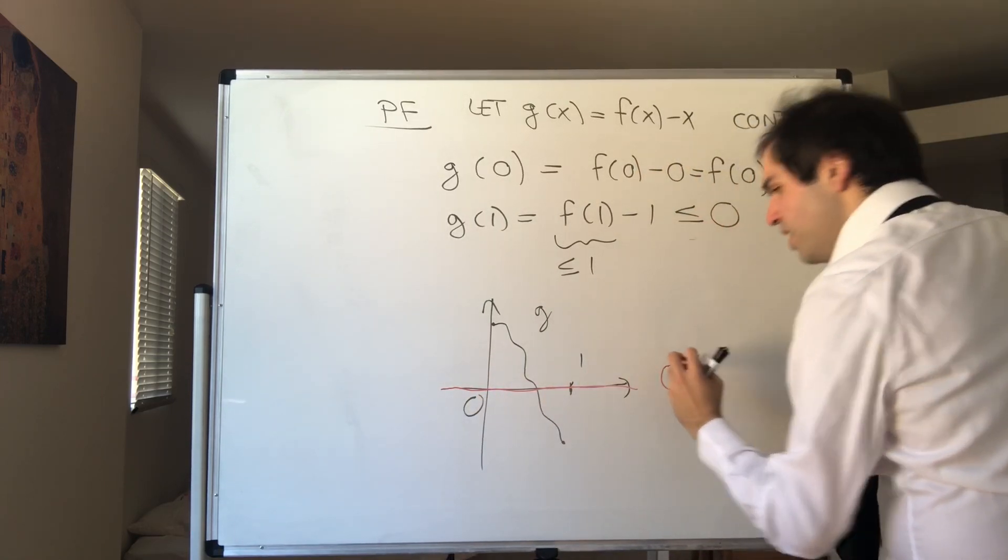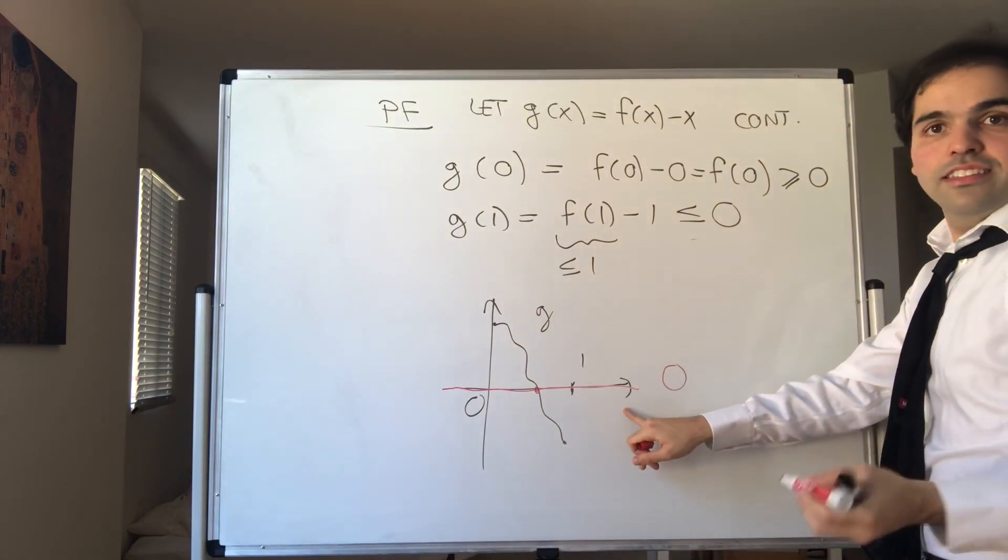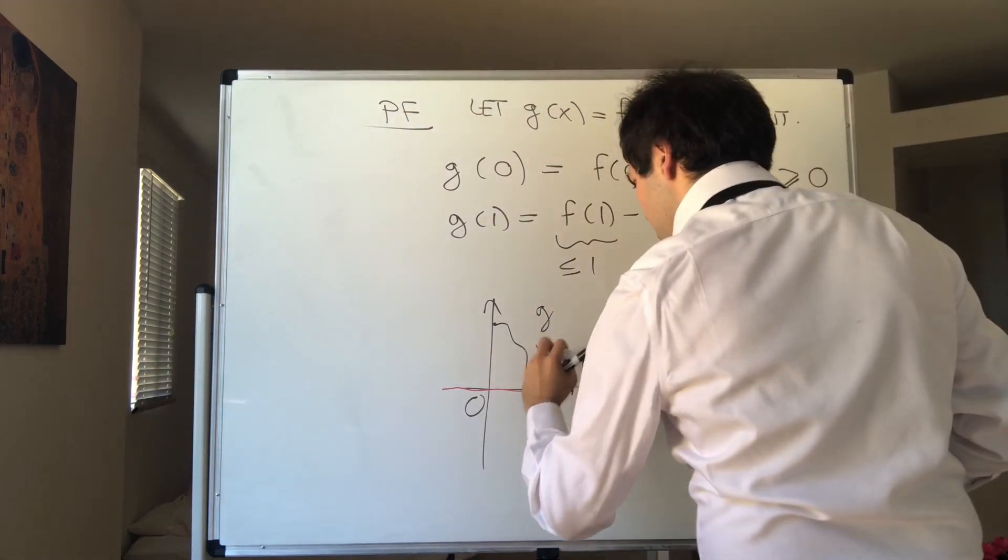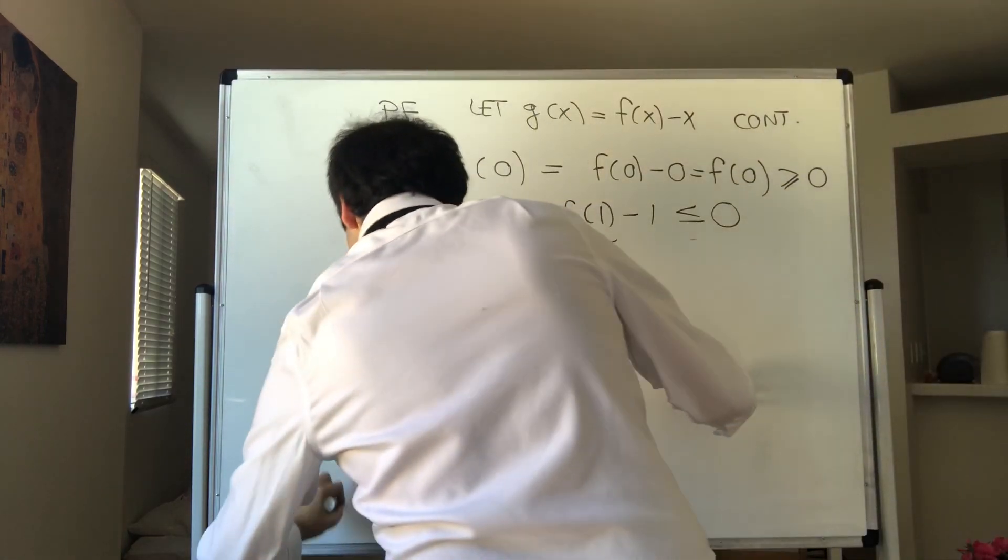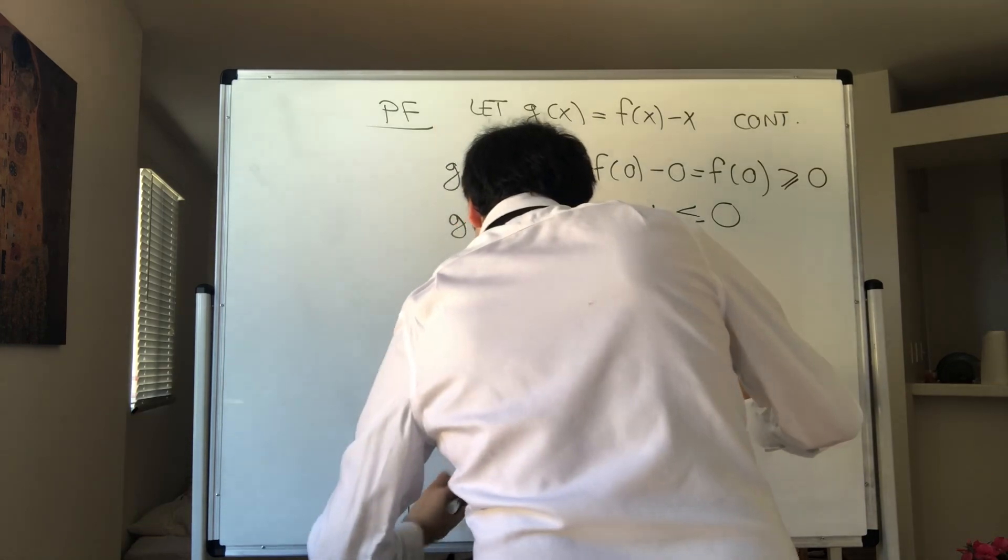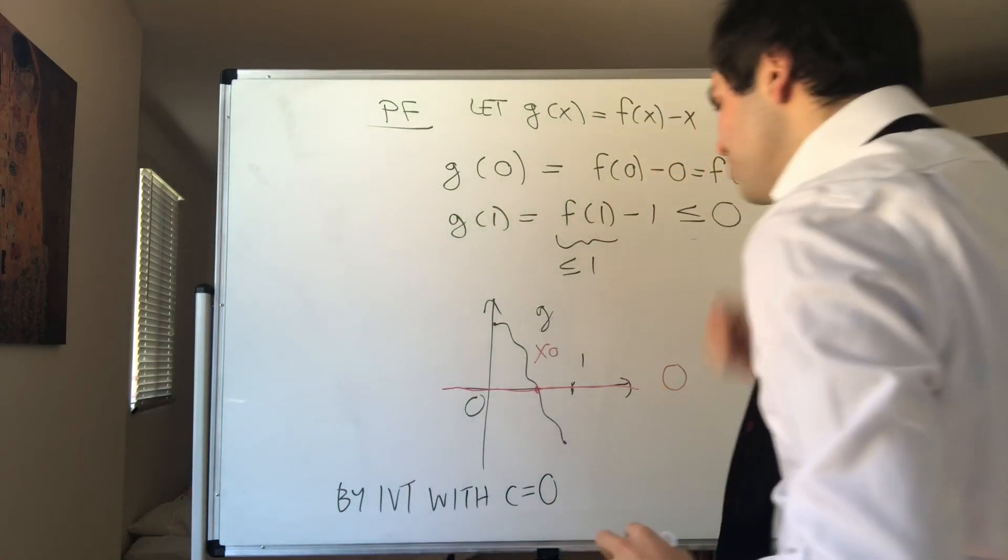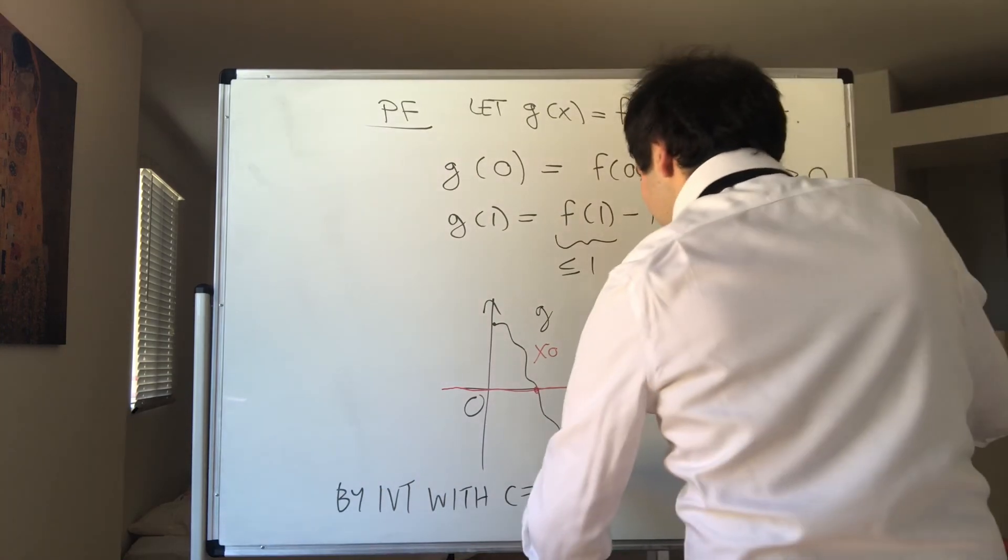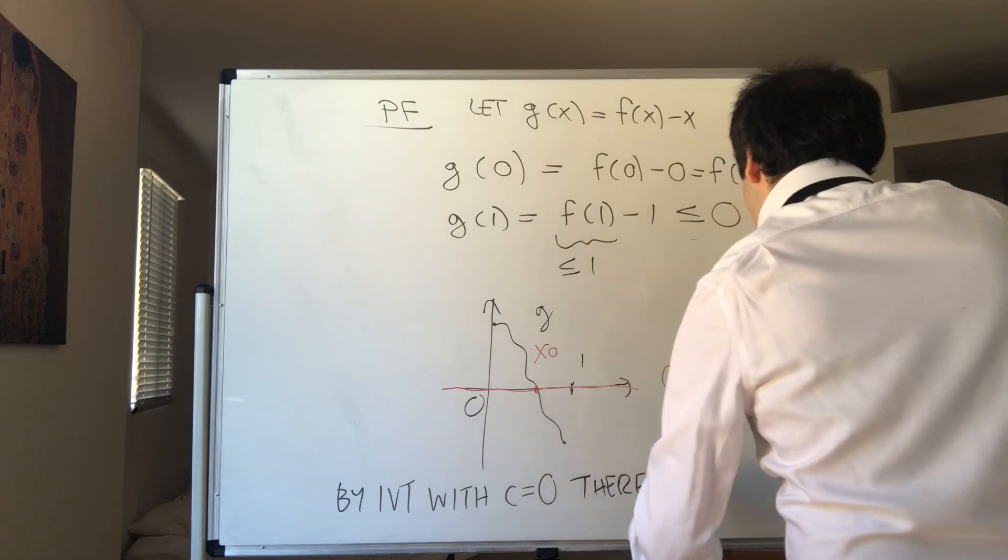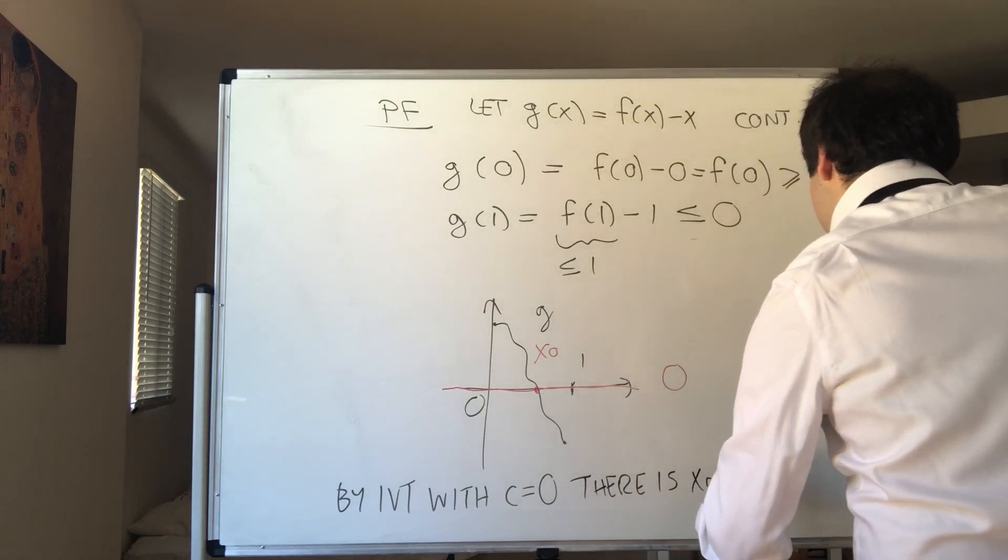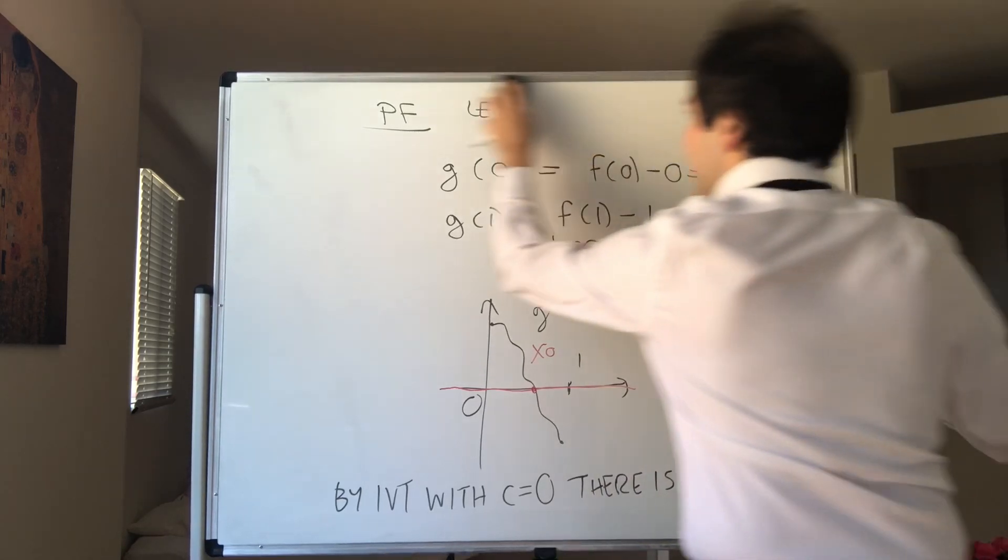We get that g must cross the x-axis at some point. So in other words, by the IVT with c equals 0, so the intermediate value here is 0, there is x₀ somewhere in the interval [0,1] with g(x₀) equals 0.